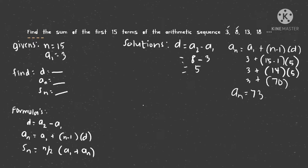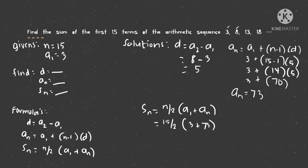The last solution is the partial sum. s sub n equals n divided by 2 times a sub 1 plus a sub n. Our a sub 1 is 3 and a sub n is 73. When you divide 15 by 2, the answer is a decimal — 7.5. So there are two solution approaches here, depending on your teacher's direction: the decimal answer or the fraction answer.